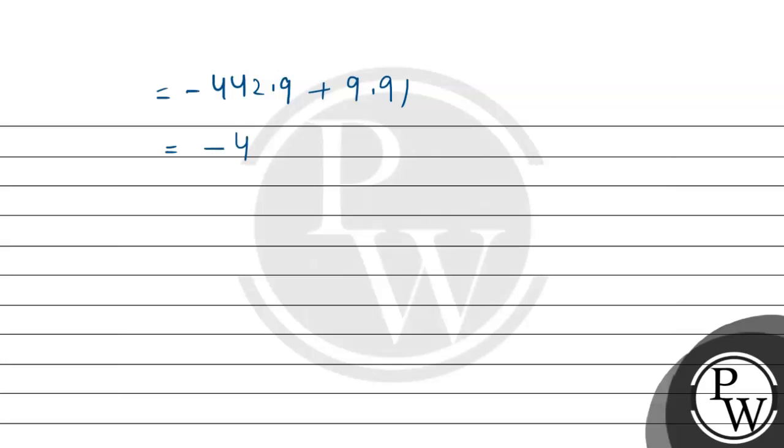Here it will be -432.99. If we round it off, we get -433 kJ.